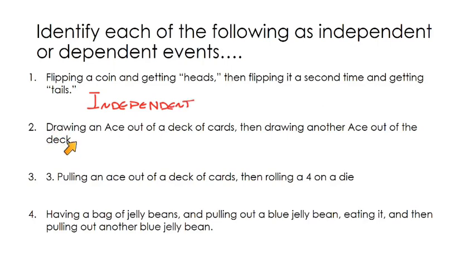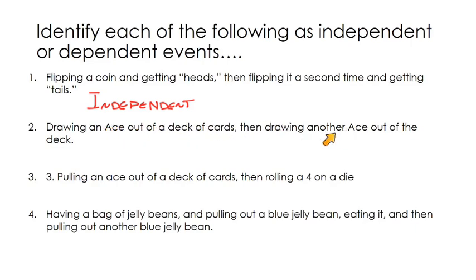Next: what's the probability that I draw an ace out of a deck of cards — that's your first event — and then draw another ace out of the deck? If I draw an ace out of the deck, that means there's one fewer card in the deck for my second draw, and maybe one fewer ace if I drew that out. Drawing the first ace out is going to reduce the number of cards for the second draw, so it is going to change the probability for the second event. So those are dependent events.